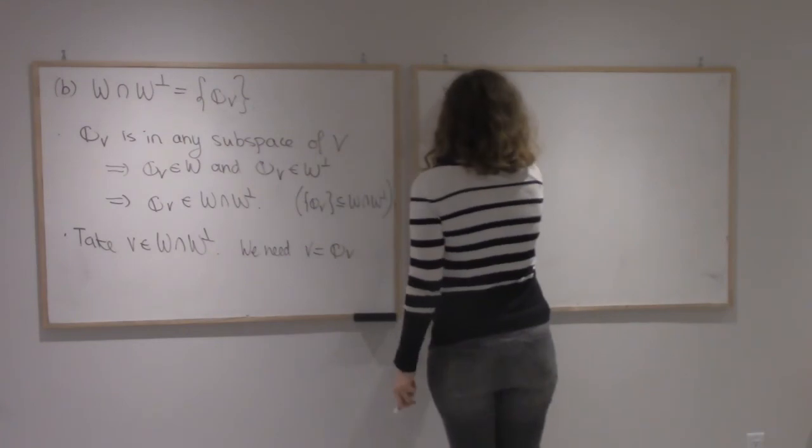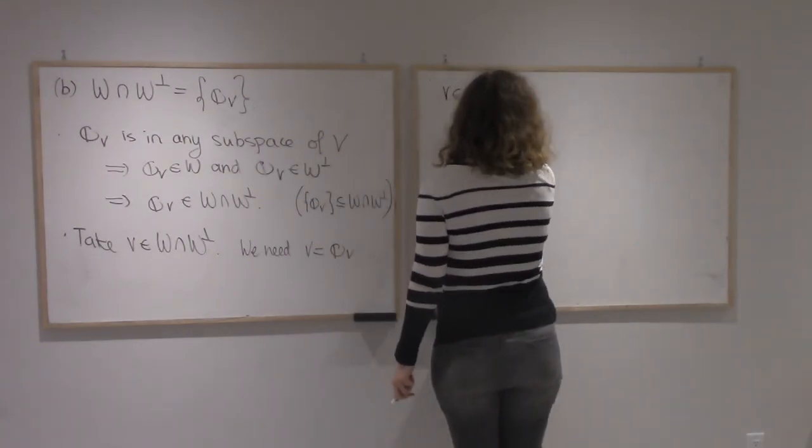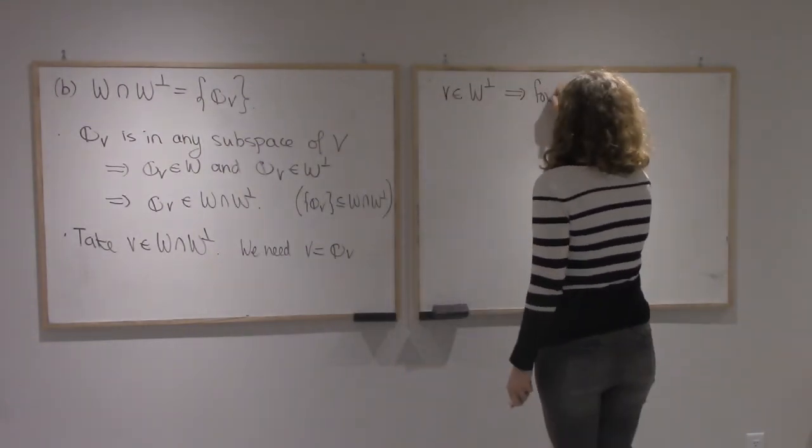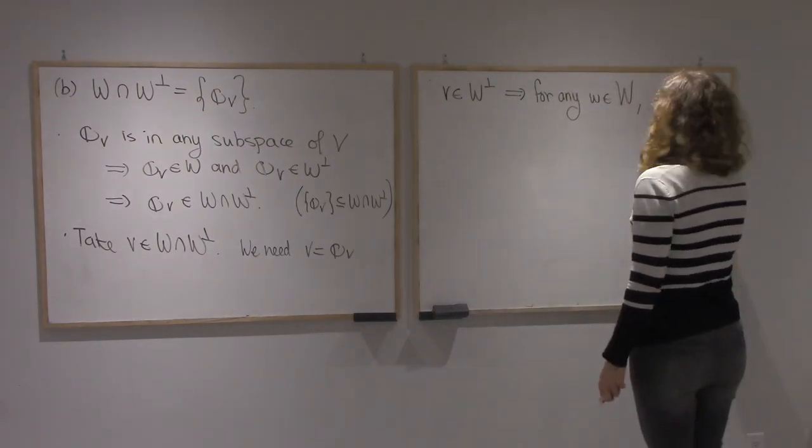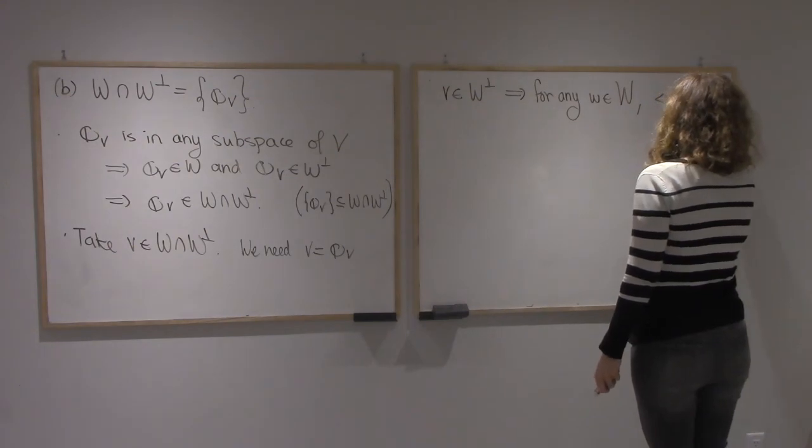So v is in W-perp. That means for any w in W, v dot w is 0.